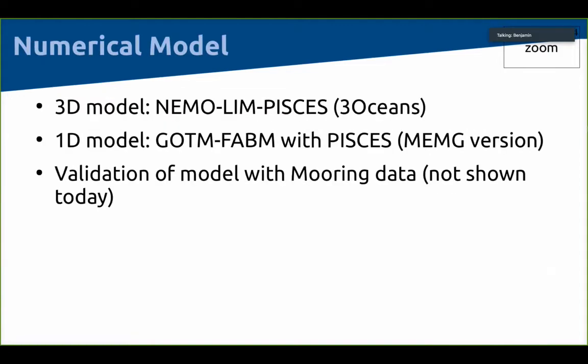To try to answer those questions I'm using different tools — a 3D model set up for the Arctic and North Atlantic, which models the ocean, the ice, and the biogeochemistry. I'm using this 3D model to force a 1D model, which does not have any ice components, but where I parameterize the ice. I'm validating this 1D model with observations, but I won't talk about that today.